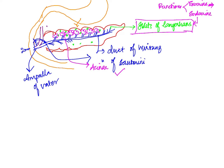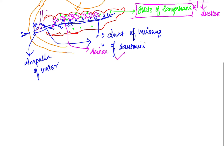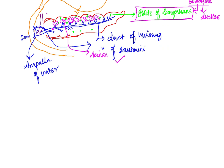Exocrine glands transfer secretions to the target organ via ducts, whereas endocrine glands are ductless. We also have the sphincter of Oddi here, which regulates the secretions from both the bile and the pancreatic duct into the small intestine.